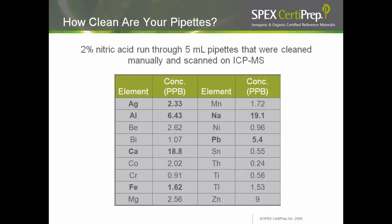The ICP-MS results in microgram per liter are shown in this table. As you can see, silver, aluminum, calcium, iron, sodium, and lead are very high.